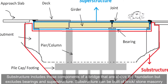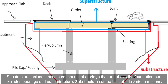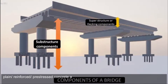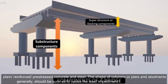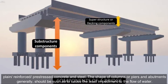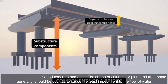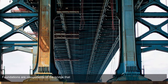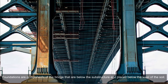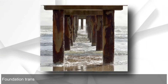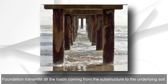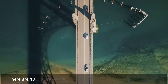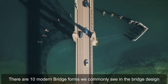Substructure includes those components of a bridge that are above the foundation but excludes bearings and superstructure. Substructure can be built of brick or stone masonry, plain, reinforced, or prestressed concrete, and steel. The shape of columns, piers, and abutments should cause the least impediment to the flow of water. Foundations are components below the substructure, placed below the level of soil, and transmit all loads from the substructure to the underlying soil.